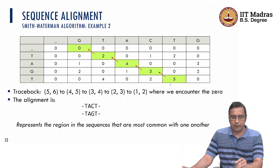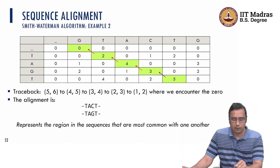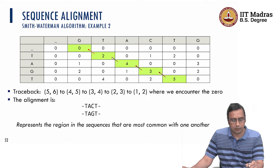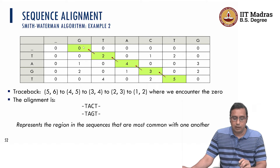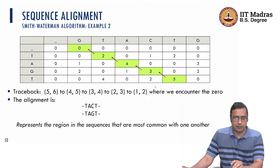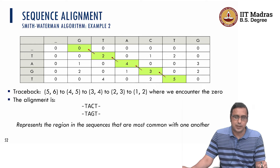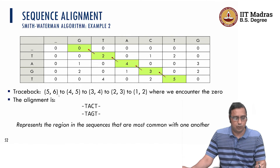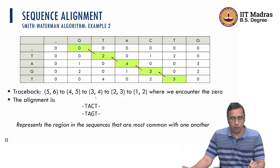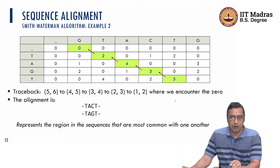We started from this cell, moved to the next cell, then the next, and so on until we reach 0. The traceback is simple: we move from cell (5,6) to (4,5), (3,4), (2,3), (2,2), (2,1), (2,2) — where the first time we encounter 0. In this path the only 0 we encounter is at that cell.